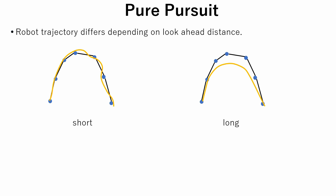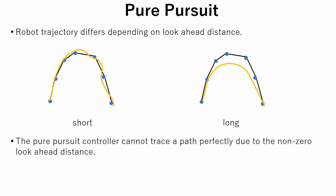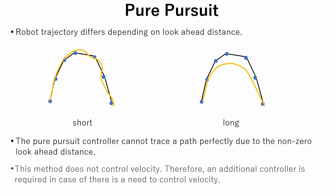There are several limitations to this method we should mention. The first limitation is that the pure pursuit controller cannot trace a path perfectly due to the fact that look ahead distance cannot be zero. The second limitation is that this method does not control velocity. Therefore, an additional controller is required in case there is a need to control velocity.